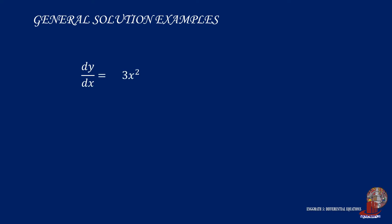Say we have the equation: the derivative of y with respect to x is equal to 3x squared. This is a first-order derivative, which means we only need to integrate the function once to remove the derivative. So by integrating both sides of the equation, we arrive at y for the integrated dy/dx.